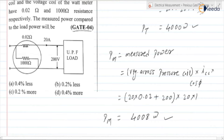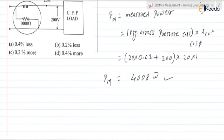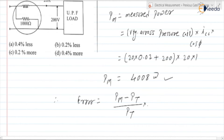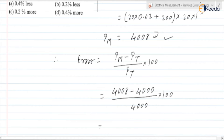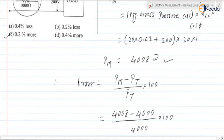They have asked the measured power compared to the load power. So the percentage error equals (measured power minus true power) divided by true power, into 100. That is (4008 minus 4000) divided by 4000 into 100, which is 0.2 percent. Since measured power is greater than true power, it is 0.2 percent more. So option C is the correct option.